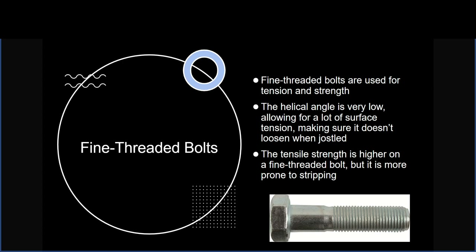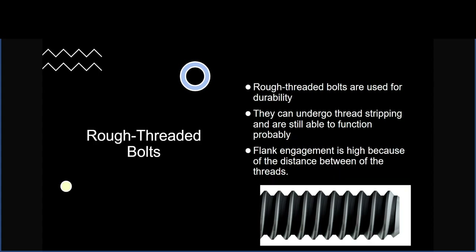Fine threaded bolts are used mainly for tension and strength. The helical angle — the angle formed between the crest and the trough of each thread — is very low, allowing for a lot of surface tension so it doesn't loosen when jostled. The tensile strength is higher than a coarse threaded bolt, but if jostled more it is much more prone to stripping. Rough threaded bolts are used for durability — they can undergo thread stripping and still function properly, and the flank engagement is high because the distance between the threads and the material in between is greater.